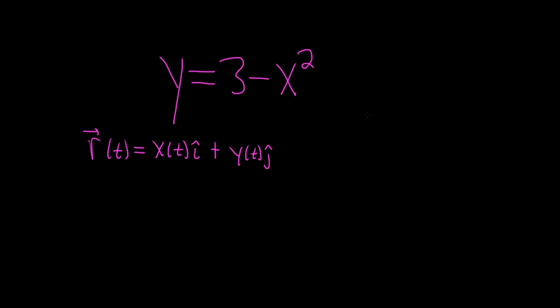So all we have to do is find x and y, and we're good. In this case, y is explicitly defined in terms of x. So in other words, we can just let x be equal to t, and then we have a formula for y right away. We would get 3 minus t squared.